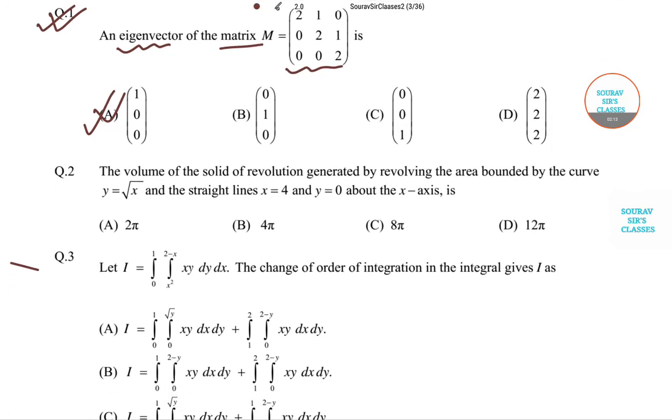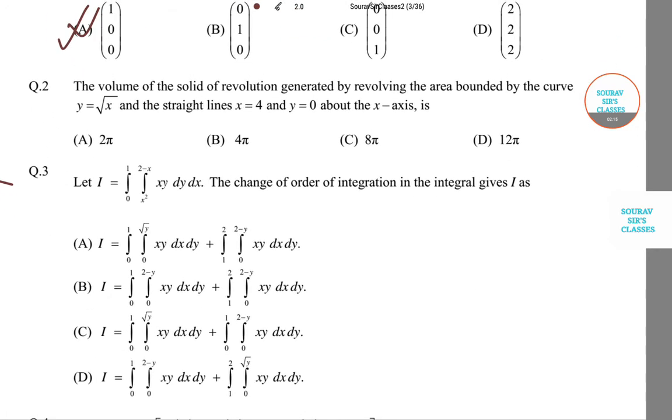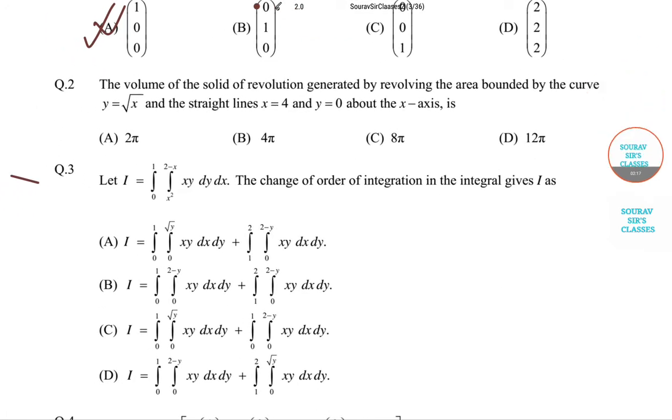Now we move on to question number 2. The question is: the volume of solid of revolution generated by revolving the area bounded by the curve y = √x and the straight lines x = 4 and y = 0 about the x-axis.